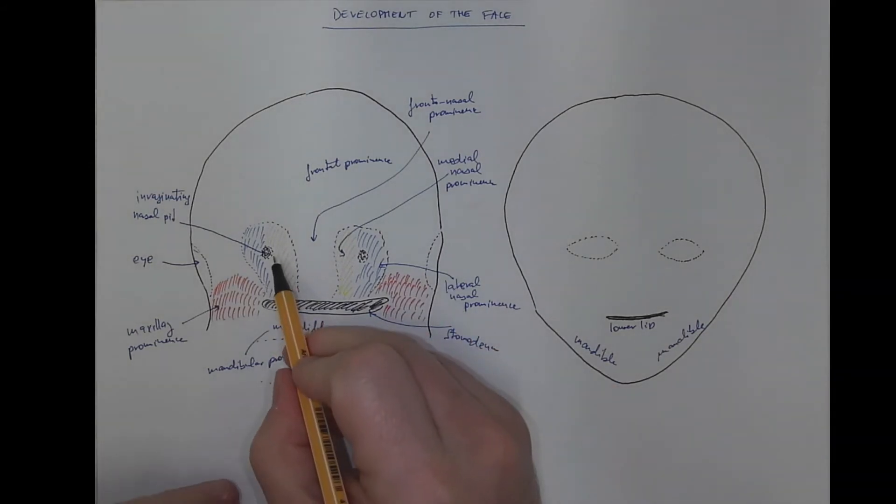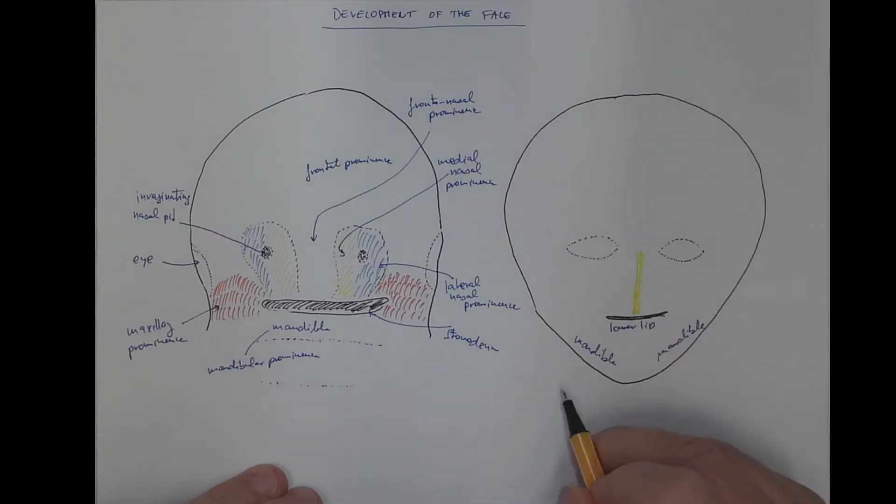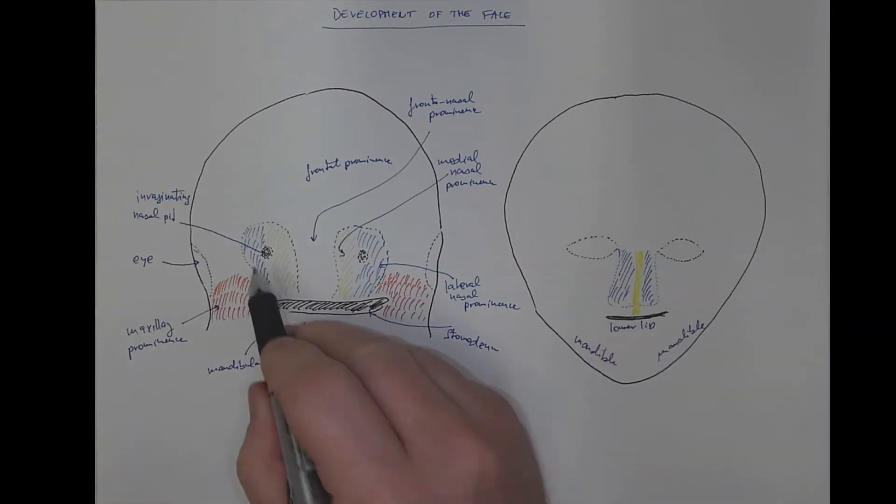And now, the medial nasal prominences, the left and right, will fuse together. So I'm using the same color. And they will form the tip of the nose and the philtrum, this part of the upper lip. While the lateral nasal prominence will form the alae of the nose. So that's the blue region. Here will be the nostrils.